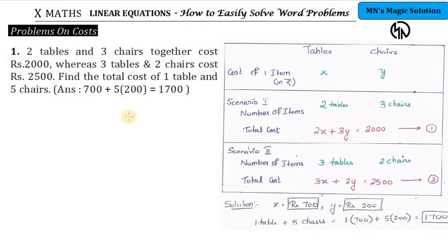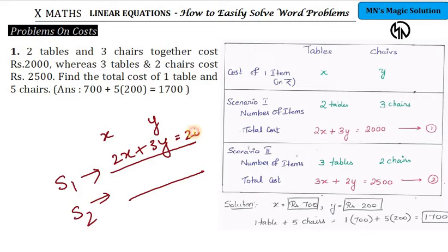Hi students, in today's session we are going to discuss linear equations, how to solve word problems. When you see word problems, you'll definitely find linear equations in two variables with two unknowns, for example x and y. There will be two statements, and for each statement you can frame an equation. The challenge lies in framing the equation corresponding to the two scenarios given by the two statements in your word problem.